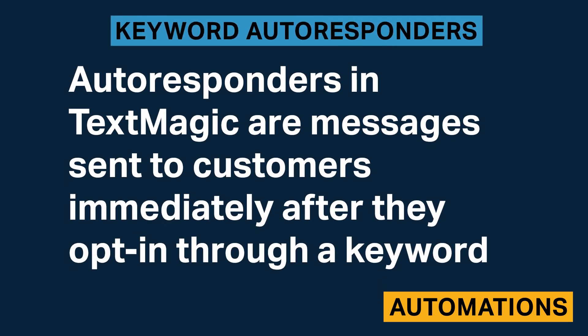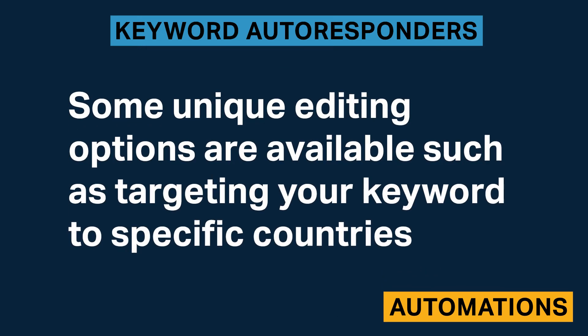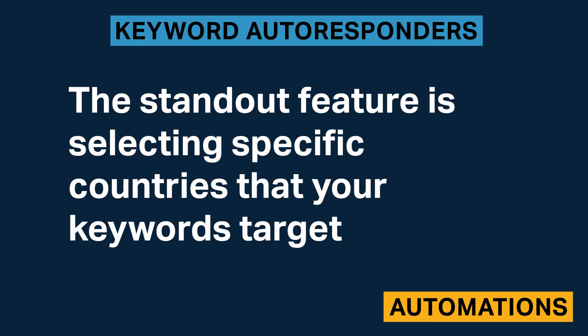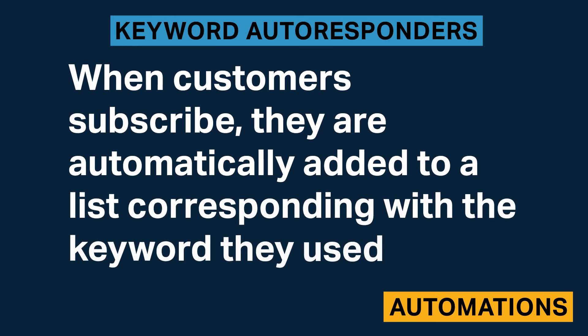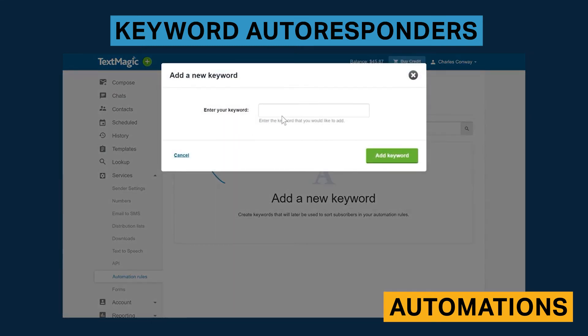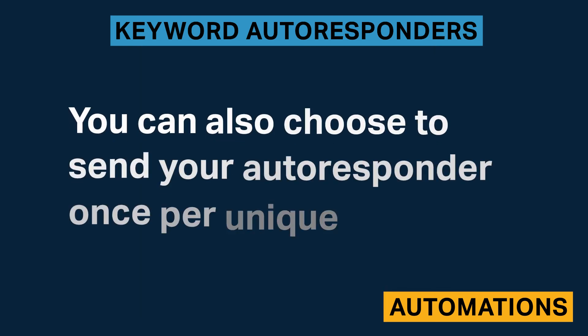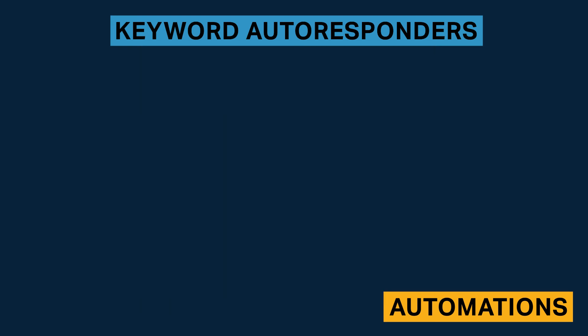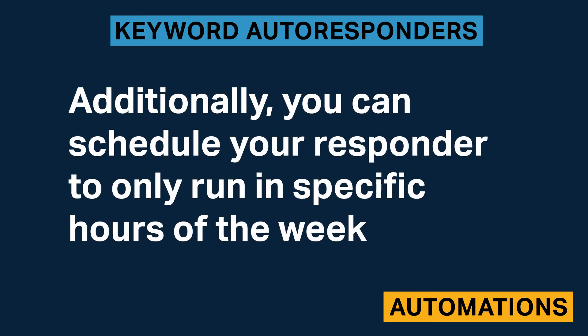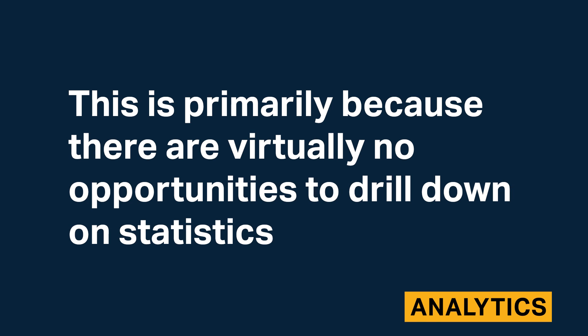Autoresponders in TextMagic are messages sent to customers immediately after they opt in through a keyword. A standout feature is the ability to target keywords to specific countries. When customers subscribe, they are automatically added to a list corresponding with the keyword they used. Automation rules also allow you to add them to additional lists for targeted marketing. You can choose to send your autoresponder once per unique sender, and schedule your responder to only run during specific hours of the week.